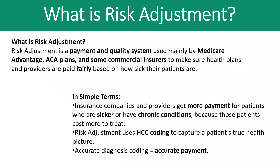First we should understand what is risk adjustment. Risk adjustment is a payment and quality system used mainly by Medicare Advantage plans, ACA plans, and some commercial insurers to make sure health plans and providers are paid fairly based on how sick their patients are. ACA refers to Affordable Care Act plans, and this is mainly a methodology used to determine the funding allocation to insurance based on the severity of the disease for each patient enrolled in the plan.